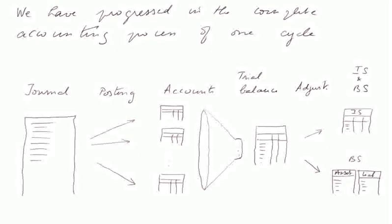So we have made progress in the complete accounting process of one cycle. We saw the journal, we posted entries and transactions into accounts which form the ledger, and now we reach the trial balance. There remains to study adjustments to produce the income statement and the balance sheet.